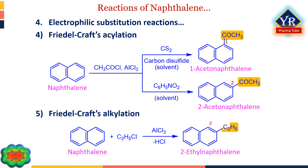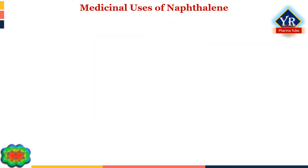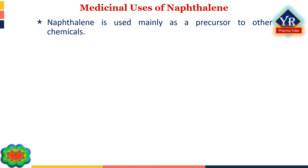In Friedel-Crafts alkylation, naphthalene undergoes alkylation with alkyl halides in the presence of aluminium chloride to give 2-alkylnaphthalene. This reaction is of little practical use, probably due to a combination of factors: the high reactivity of naphthalene causing side reactions and polyalkylations, and the availability of alkyl naphthalenes via acylation or ring closure.